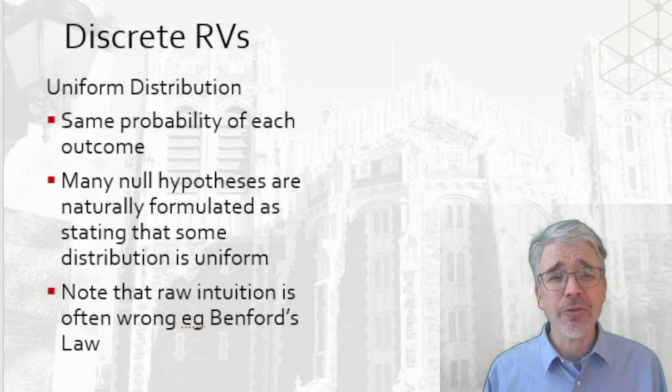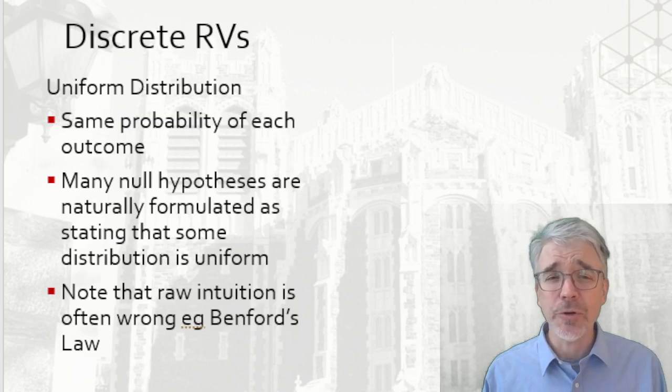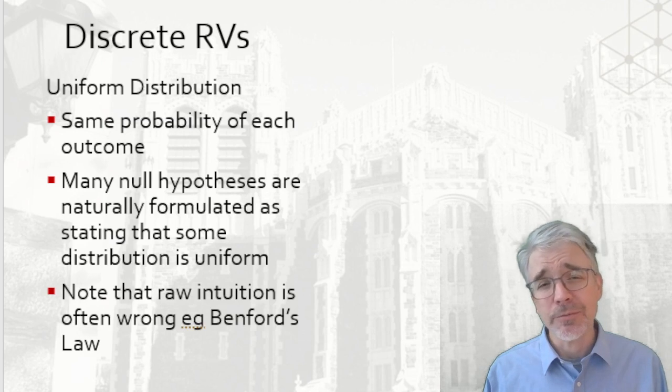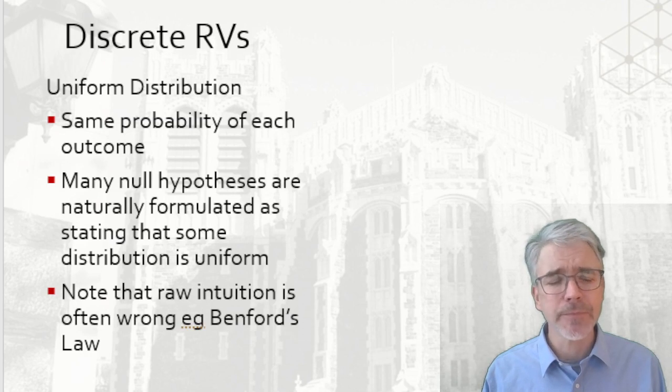Now there are some cases where our raw intuition might be misleading. One of the classics is Benford's law, which basically states where we have measurements of a thing, then we're more likely to see leading values one or two than to see values like eight or nine. So sometimes you might think a measurement should have a uniform distribution. It might actually not work out that way. We'll come back to that later.